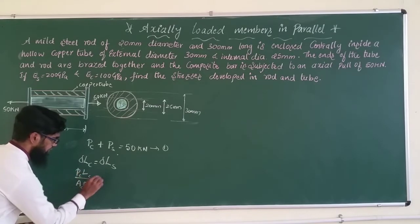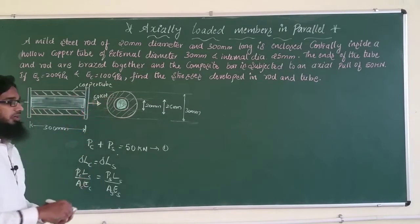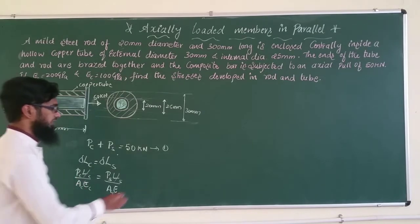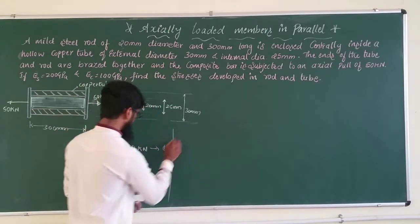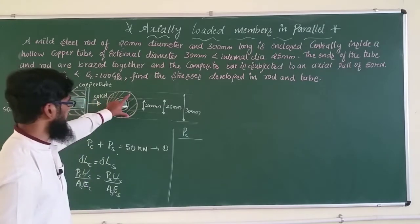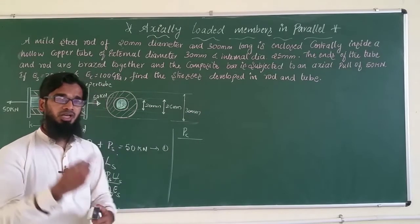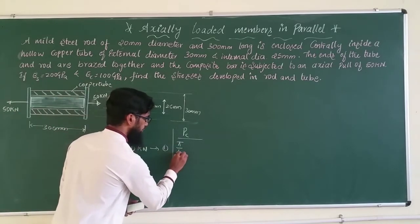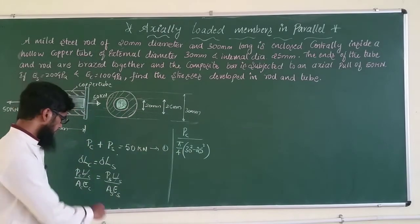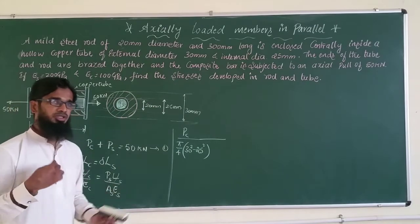After cancelling L, we have P_c / (A_c · E_c) = P_s / (A_s · E_s). For the copper hollow tube, the area is π/4 × (outer diameter² − inner diameter²) = π/4 × (30² − 25²). Young's modulus of copper is 100 GPa.